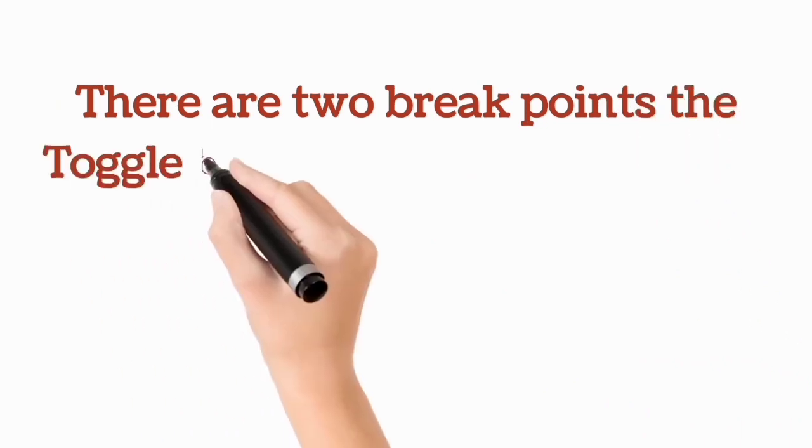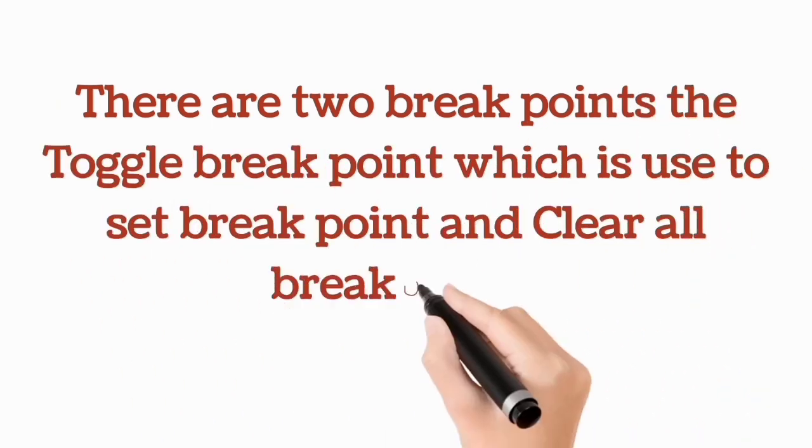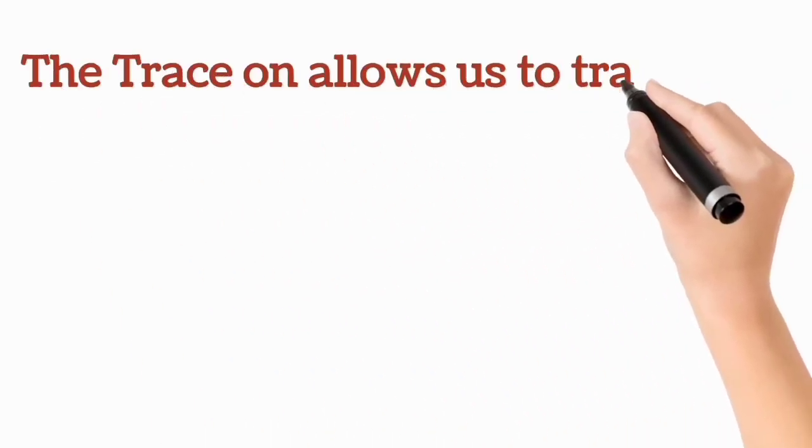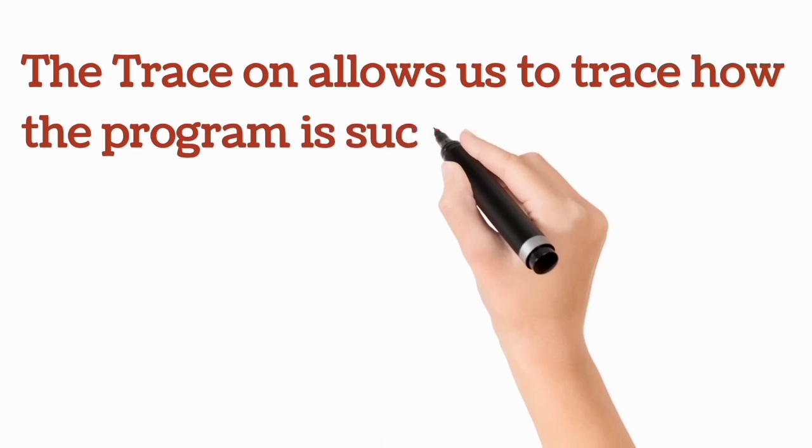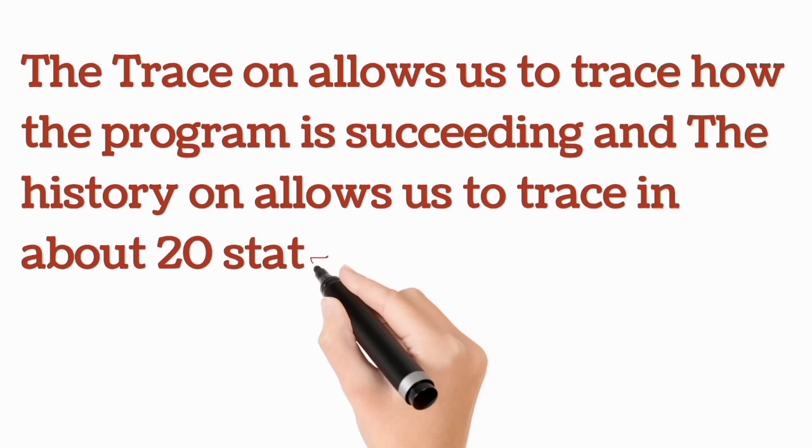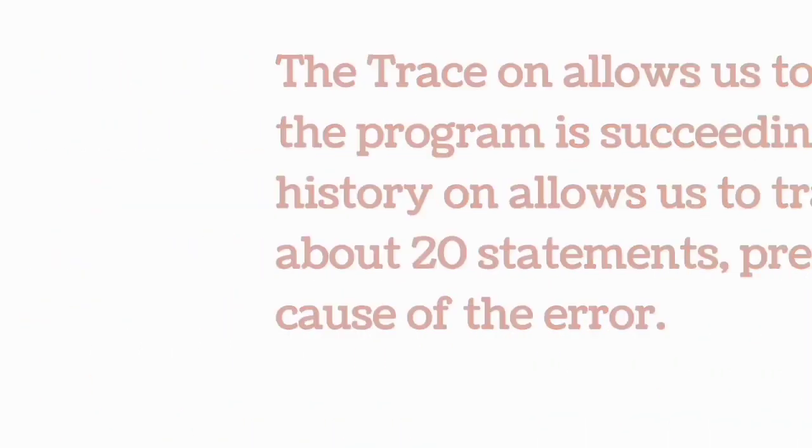There are two break point options: the toggle break points which is used to set break points and clear break points. The trace on allows us to trace how the program is succeeding and the history on allows us to trace about 20 statements preceding the course of the error.